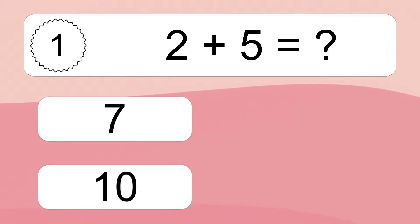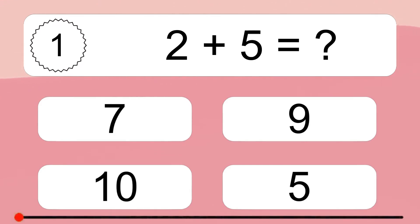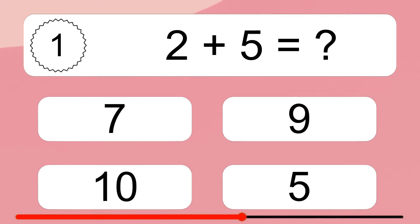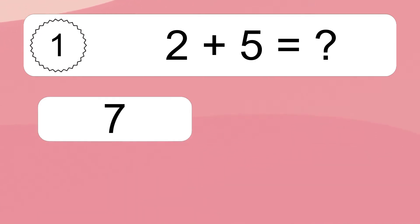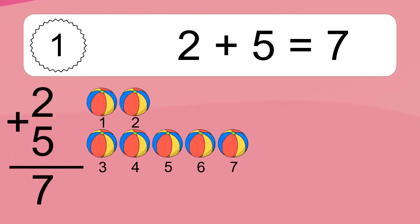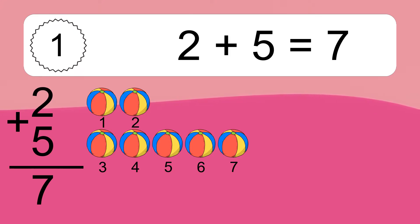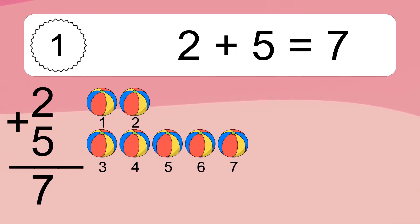2 plus 5 equals what? 2 plus 5 equals 7. Let's count it: 1, 2, 3, 4, 5, 6, 7.